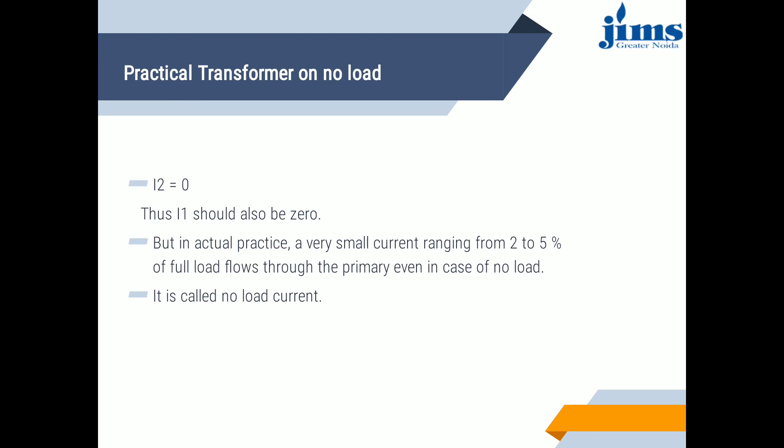Practical transformer on no load: when varying flux is set up in magnetic material, there will be power loss called the iron or core loss. So the input current to the primary under no load condition also supplies the hysteresis and eddy current losses — known as iron losses — occurring in the core, in addition to a small amount of copper loss occurring in the primary winding. Hence, the no load primary current I0 does not lag behind applied voltage V1 by 90 degrees, but lags behind V1 by angle φ0, which is less than 90 degrees. Input power on no load: P0 = V1·I0·cos(φ0), where cos(φ0) is the primary power factor under no load condition.